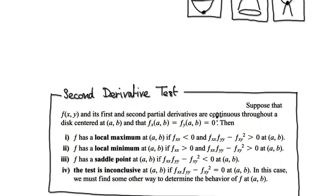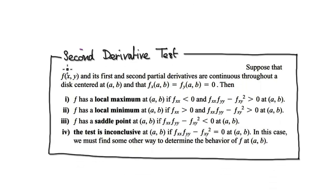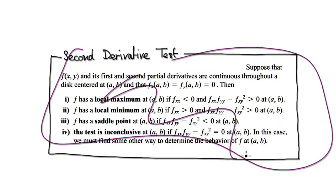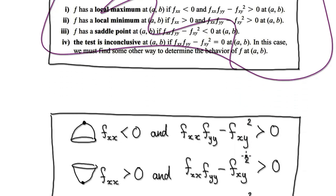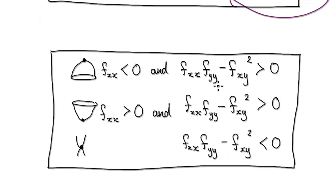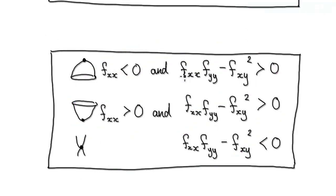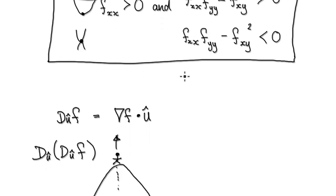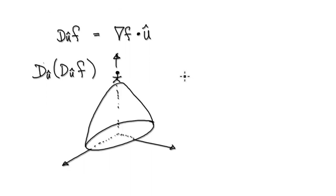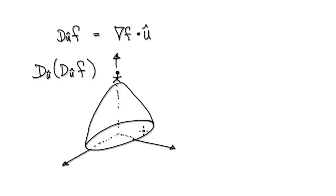So this is the second derivative test, but I've summarized it to this. We're going to try and understand where this whole thing comes from. The trick to understanding the second derivative test is to look at the directional derivative of a directional derivative. Let me just remind you of what a directional derivative is.